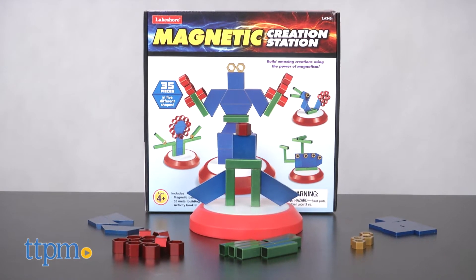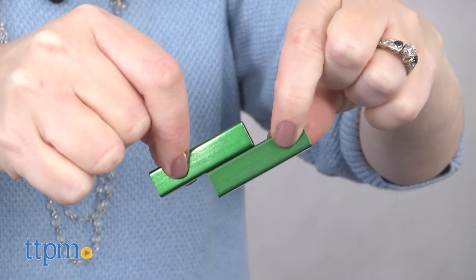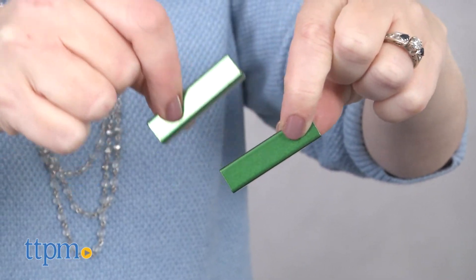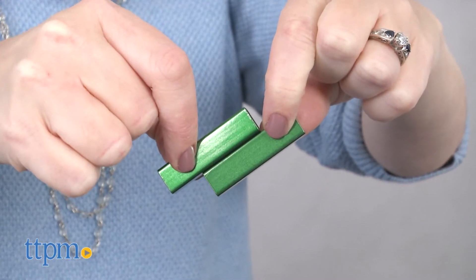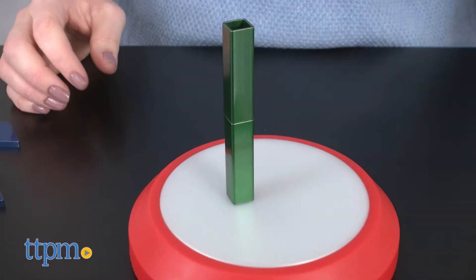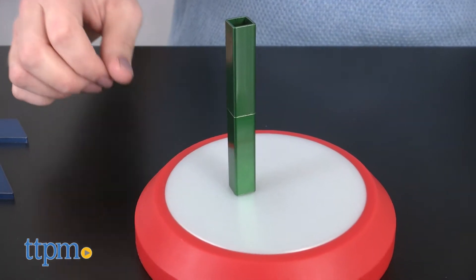This is a magnetic construction set, only the metal pieces aren't magnetic. On their own, they don't stick together at all. Only when they're placed on the magnetic building base are they charged with any magnetic properties.